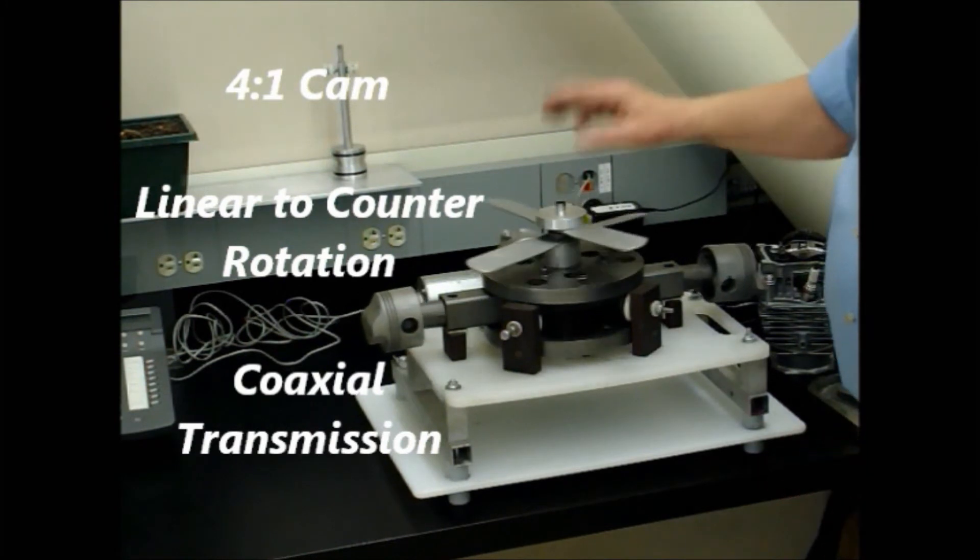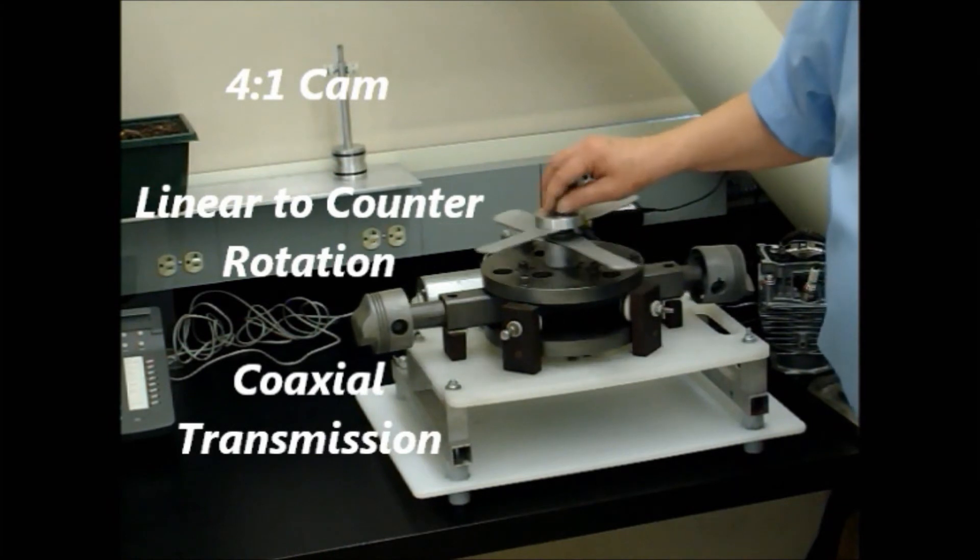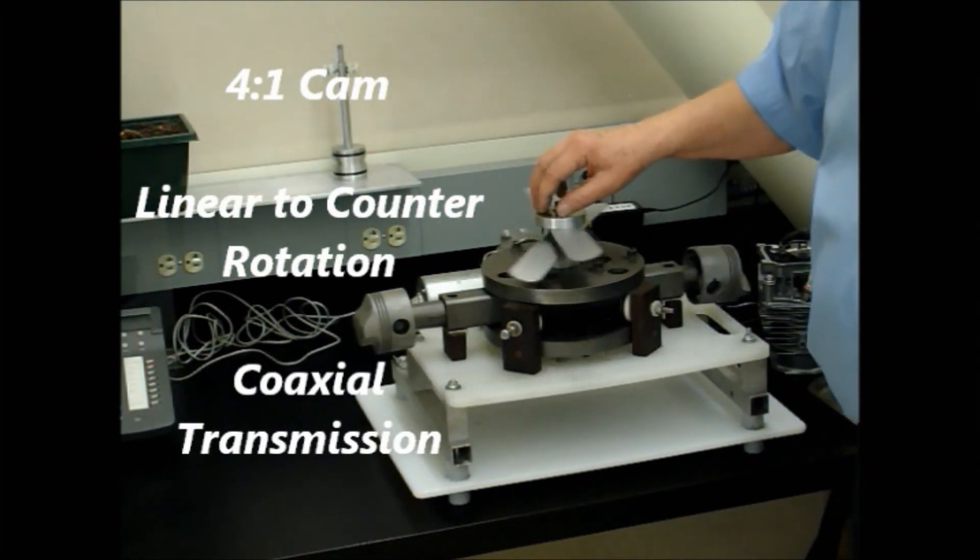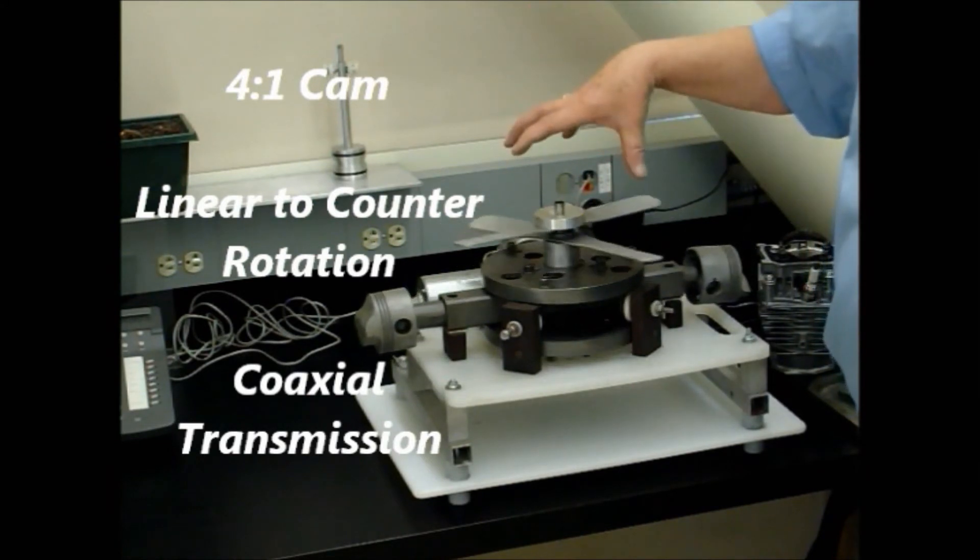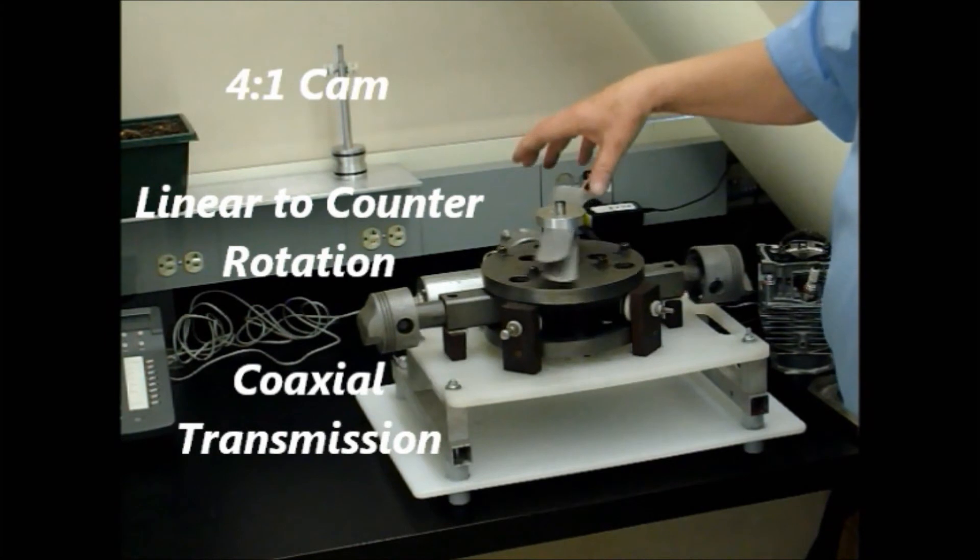The first and most obvious feature is coaxial counter-rotation. As you know, that eliminates the need for the tail rotor of the entire system. So it very much simplifies the powering of vertical takeoff and landing aircraft.